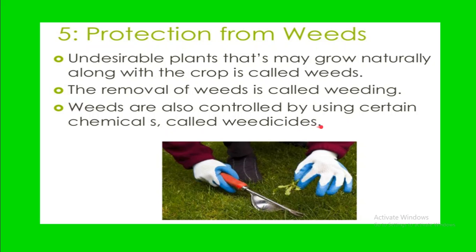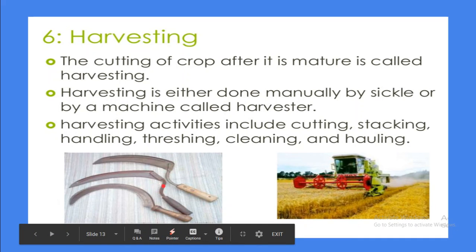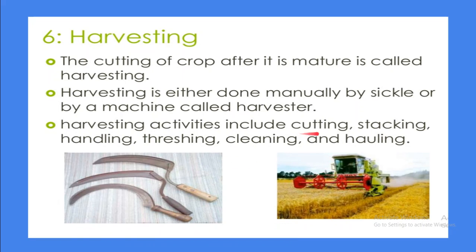The sixth practice is harvesting. The cutting of a crop after it is mature is called harvesting, done at ripening time. Harvesting is either done manually using a sickle or by using machines called harvesters. Harvesting activities include cutting, stacking, handling, threshing, cleaning, and hauling.